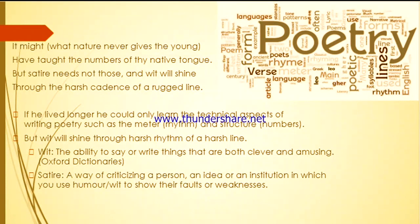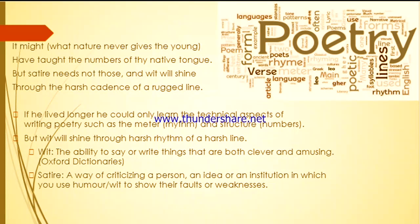'It might, what nature never gives the young, have taught the numbers of thy native tongue. But satire needs not those, and wit will shine through the harsh cadence of a rugged line.' If Oldham had lived longer, according to Dryden, he could only have learned the technical aspects of writing poetry — such as meter and structure — things you learn by experience, not by nature. But wit will shine through the harsh rhythm of a rugged line. Wit is more about talent, not technicality — the ability to say or write things that are both clever and amusing. Satire is a way of criticizing a person, idea, or institution using humor and wit to show their faults. The difference: wit is not necessarily used to criticize something, but satire is.